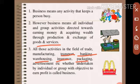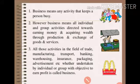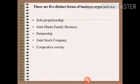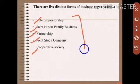All these activities, with the objective to earn profit, are called business. There are five distinctive forms of business organization: sole proprietorship, joint Hindu family business, partnership, joint stock company, and cooperative society. Now we will study them one by one.